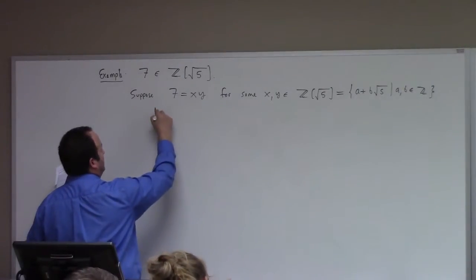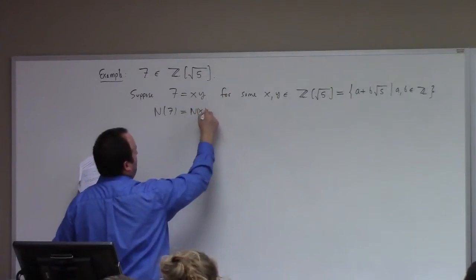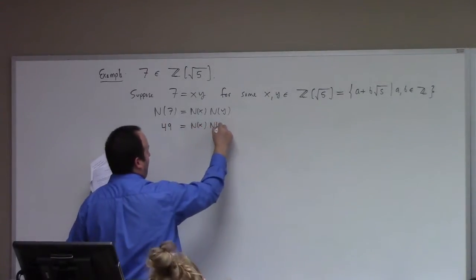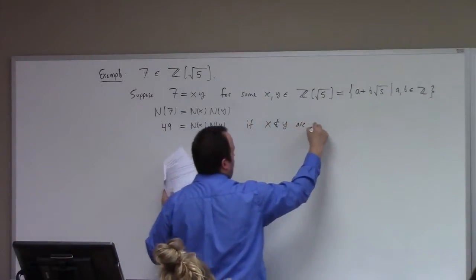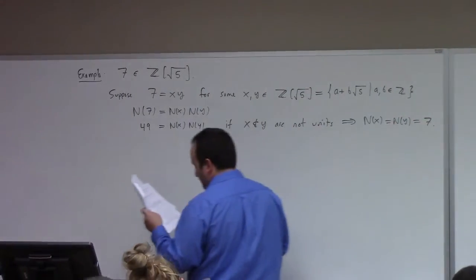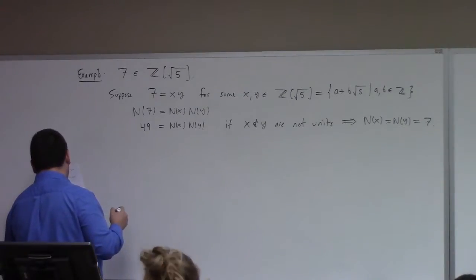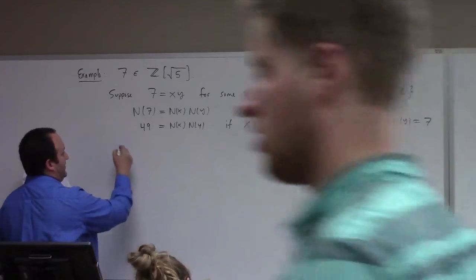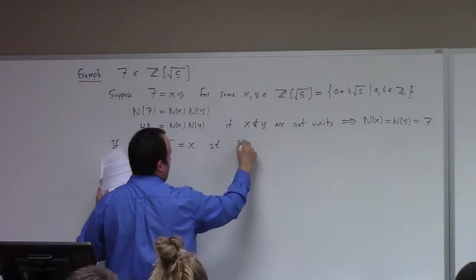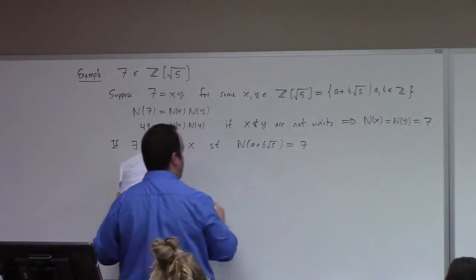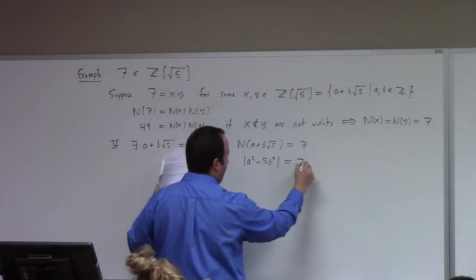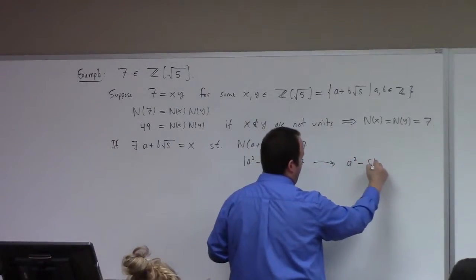We can use the norm, which was multiplicative. So the norm of 7 should equal the norm of x times the norm of y, which gives us 49 equals norm(x) times norm(y). So if x and y are not units, that implies norm(x) equals norm(y) equals 7. So if there exists a plus b·√5 equal to x such that the norm of a plus b·√5 equals 7, that would give us that the absolute value of a² minus 5b² equals 7, or equivalently a² minus 5b² equals ±7.